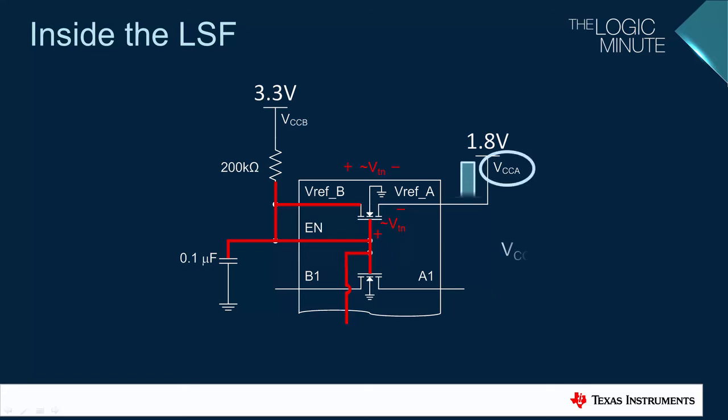Using Kirchhoff's voltage law, you can find that the gate voltage referenced to ground will be equal to the voltage across the external capacitor, labeled here as V bias.